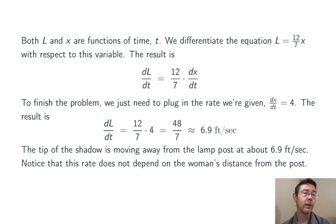Notice that in this case we never had to use the fact that the woman was 30 feet away from the post. The rate at which the tip of the shadow is moving does not depend on the woman's distance from the post.